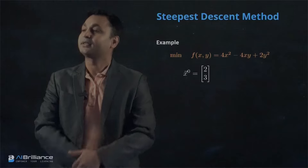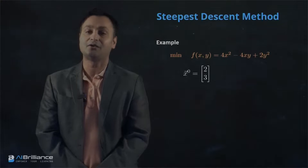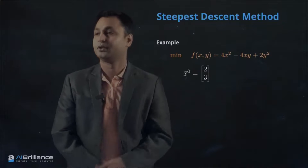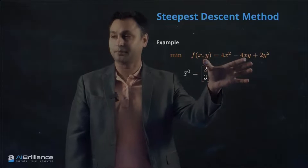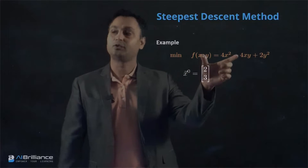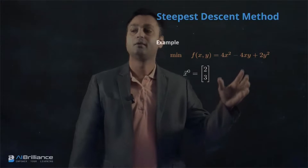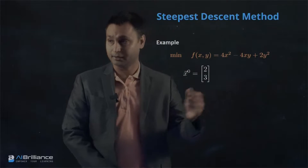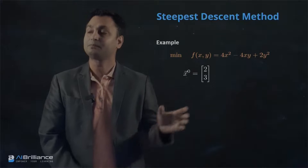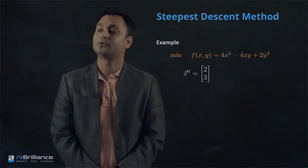Let's take an example problem and see how the steepest descent method actually works. Here is a two-variable problem which is a function of x and y: 4x² minus 4xy plus 2y². That is what we want to minimize.